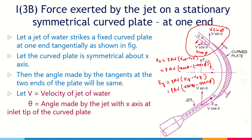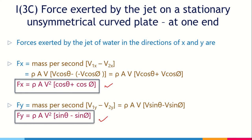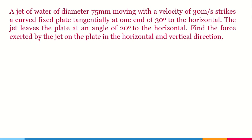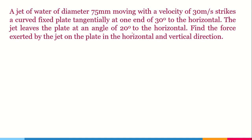Now let's solve a numerical problem. A jet of water of diameter 75 mm is moving with a velocity of 30 m/s, striking a curved fixed plate tangentially at one of its ends at 30° to the horizontal. The jet leaves the plate at an angle of 20°. Since two different angles are given — 30° at inlet and 20° at outlet — this is an unsymmetrical plate. Find the force exerted by the jet in the horizontal and vertical directions.